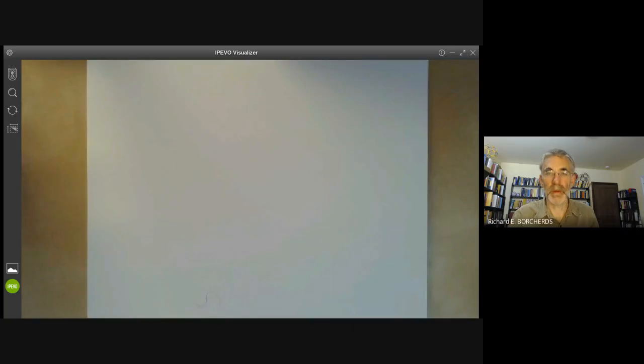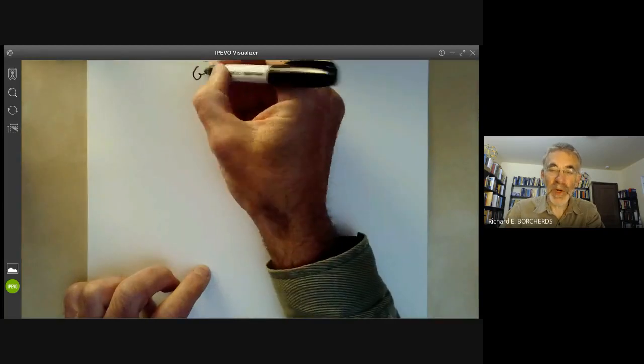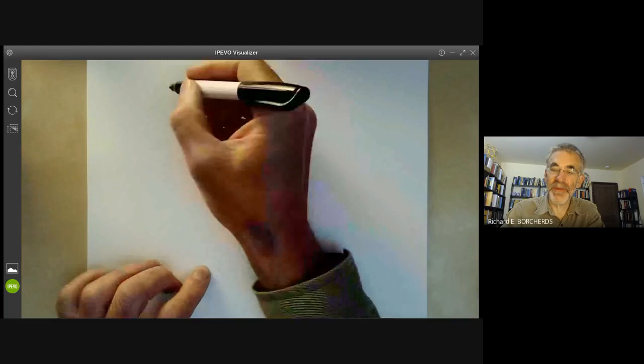This lecture is part of an online mathematics course on group theory and will be about the Jordan-Holder theorem. So if we've got a group G, we can break it up into simple groups as follows. We can find a chain of subgroups.